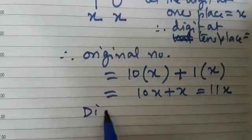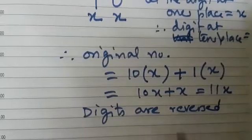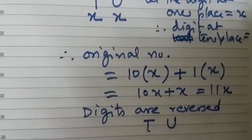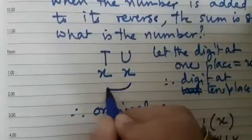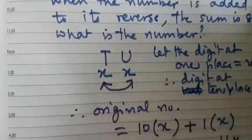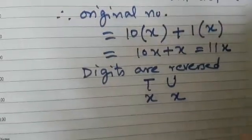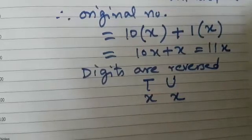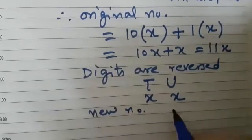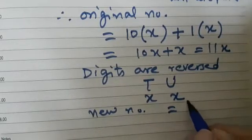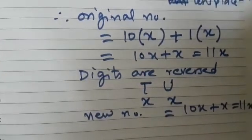Now, when the digits are reversed, let us see what is there at the tens and the units place. You see, I have to reverse this. Do you think there will be any change? No. So here again, we have at the units place X and the tens place also X. So what will be the new number? The new number is also the same. That is 10X plus X, which is 11X.